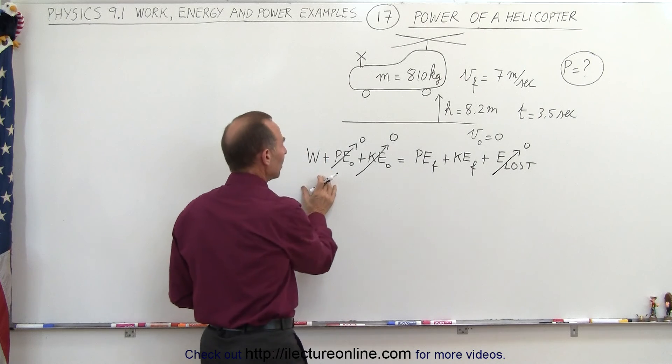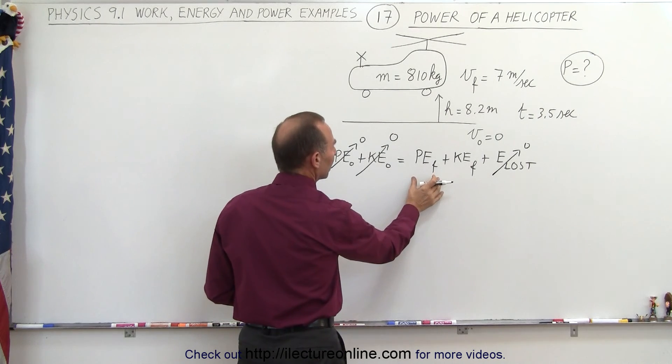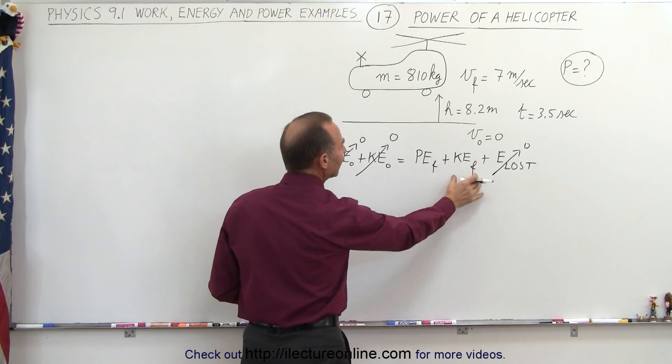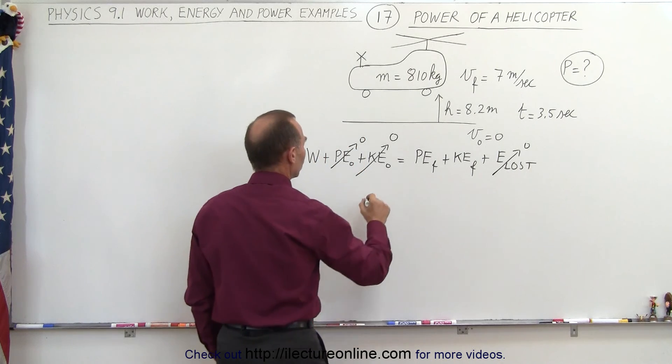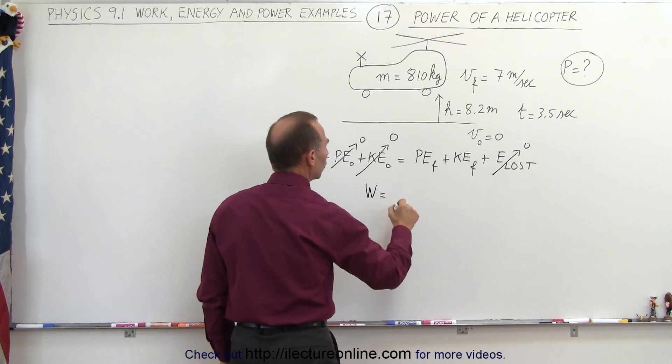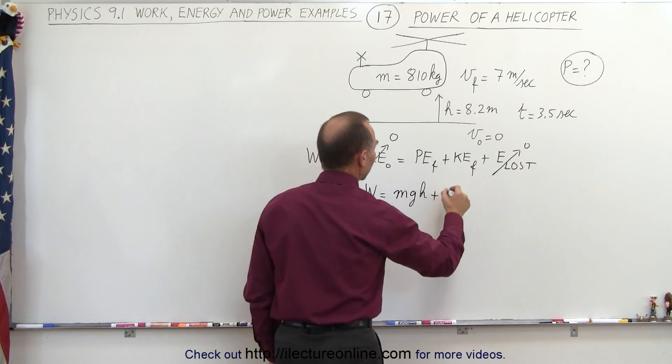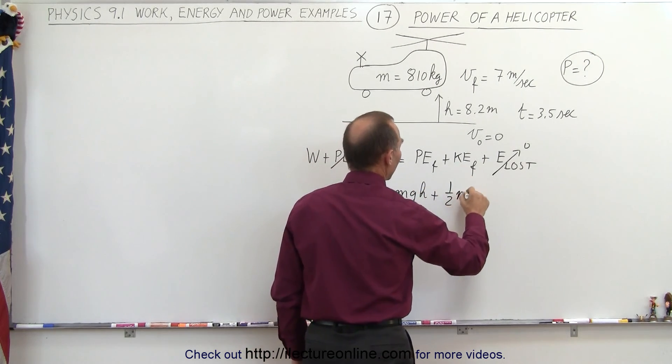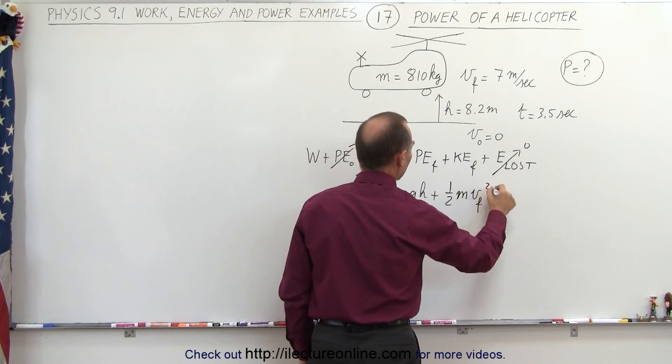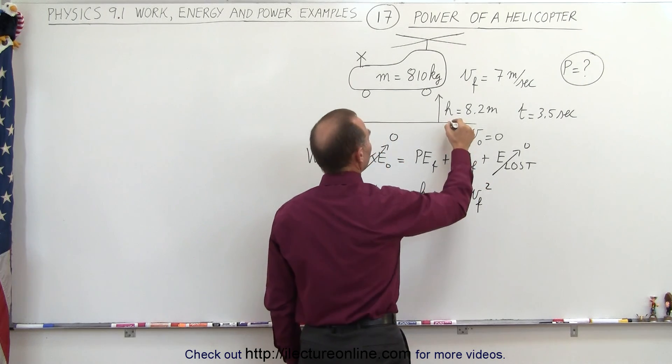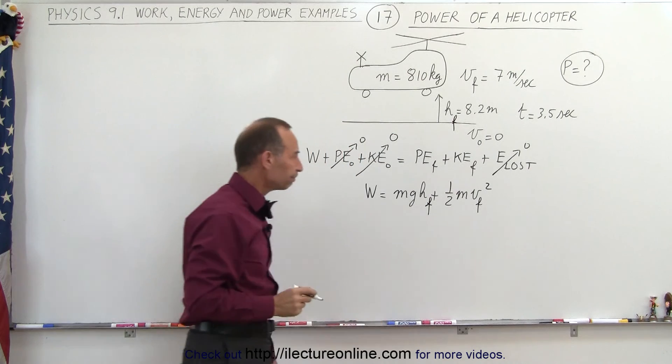So any work put into the system is equal to the potential energy gained and the kinetic energy gained. So work is equal to potential energy, that would be mgh, plus kinetic energy, which would be one-half mv final squared, and of course that would be h final. Let's call this h final.